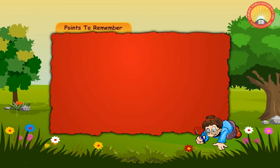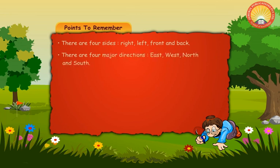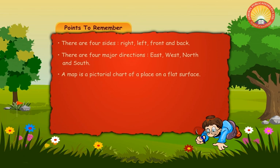Points to remember. There are four sides: Right, Left, Front and Back. There are four major directions: East, West, North and South. A map is a pictorial chart of a place on a flat surface. Locating people or places in a given space is called mapping.